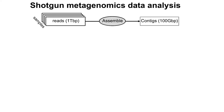Normally these metagenomic samples are quite big, so they can be in the terabyte range. For example, we can assemble them into contigs and still end up with hundreds of gigabytes, and we can start asking questions about these environments.